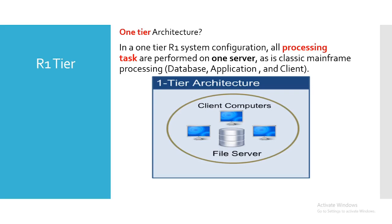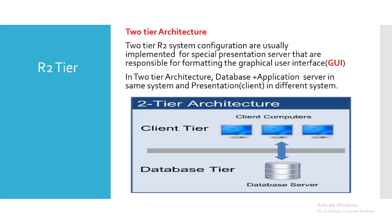In two-tier architecture, the R2 system configuration is usually implemented with a special presentation server responsible for formatting the graphical user interface. In two-tier architecture, the database and application server are in the same system, and the presentation client is in a different system.